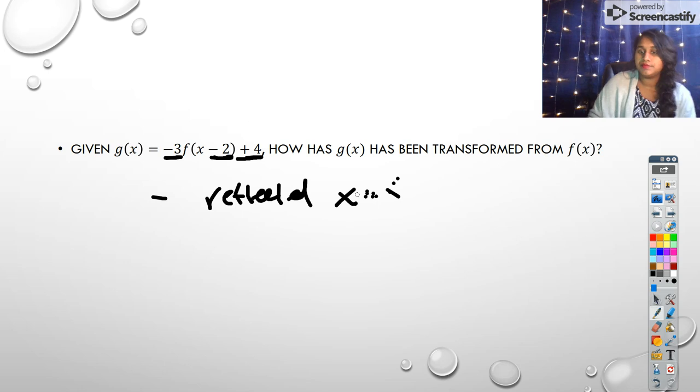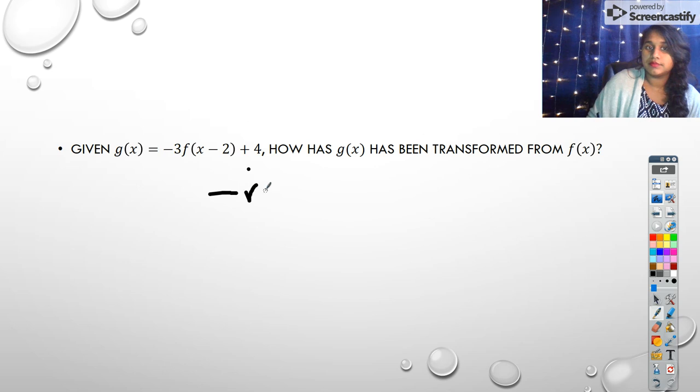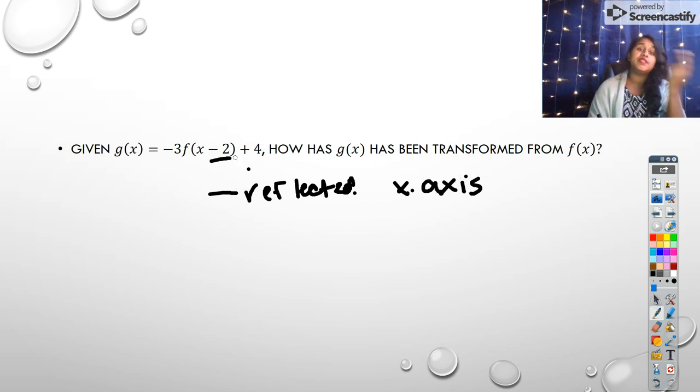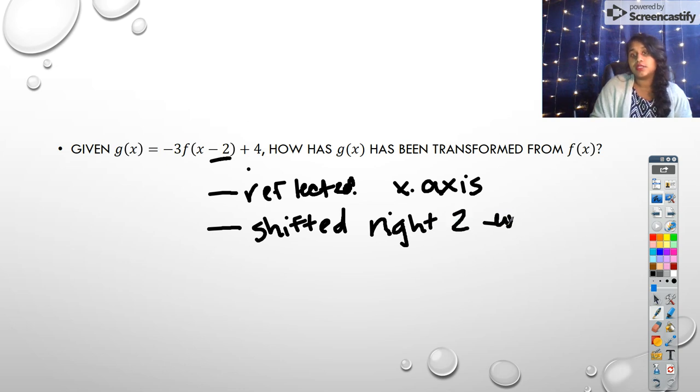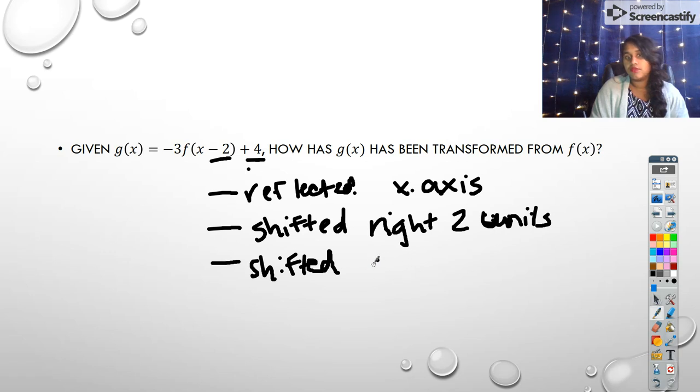This minus two tells me that I shifted left or right. Well, it tells me that I actually shifted to the right by two units. It doesn't mean that I'm at x equals two, because we don't know the original f function. We just know we've been shifted right two units. And this plus four means that I have been shifted up four units.